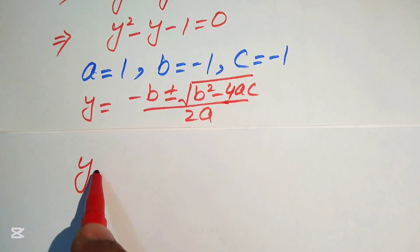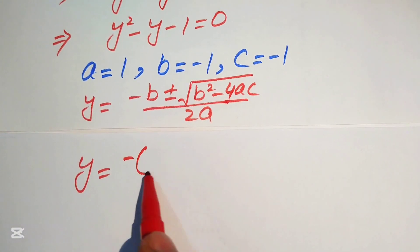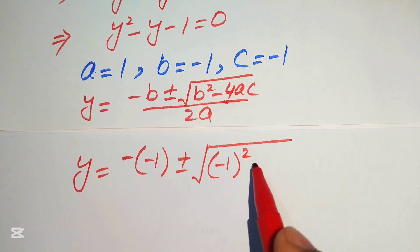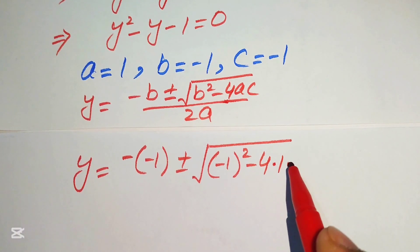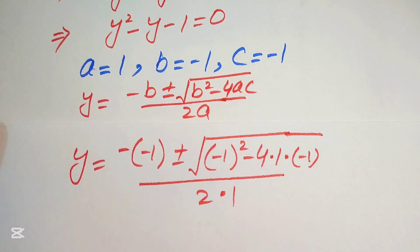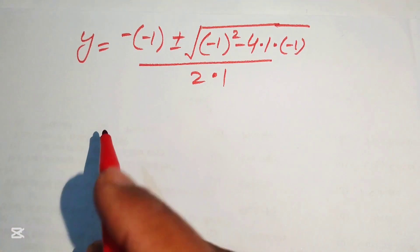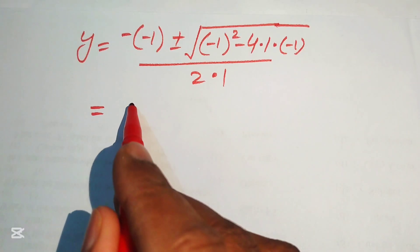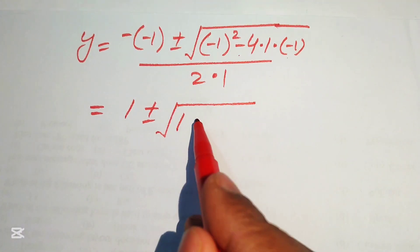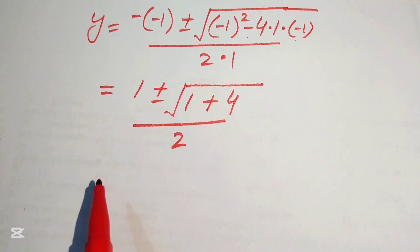Substituting the values: minus b gives minus times minus 1, which is plus 1; b squared gives (−1)² = 1; and minus 4ac gives minus 4 times 1 times (−1) = plus 4; divided by 2 times 1 = 2. So we have y equals 1 plus or minus square root of 5, divided by 2.